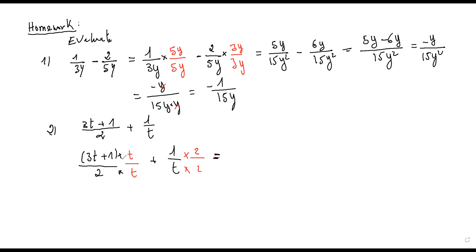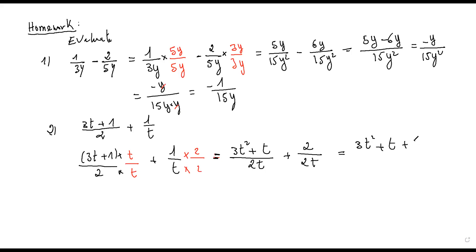Three t times t is three t squared. T times one is plus t. Over two times t is 2t, plus one times two is two, and t times two is 2t. We find the same denominator 2t, so the result is three t squared plus t plus two over 2t.